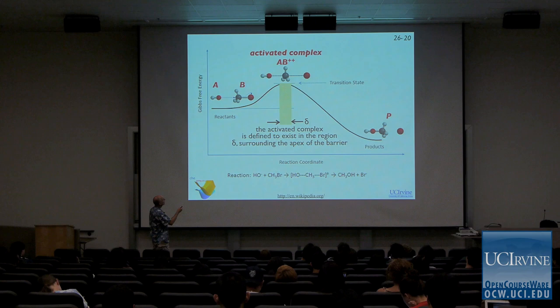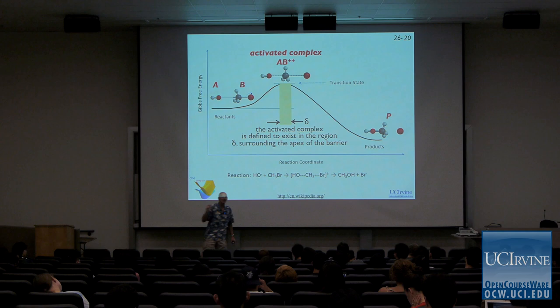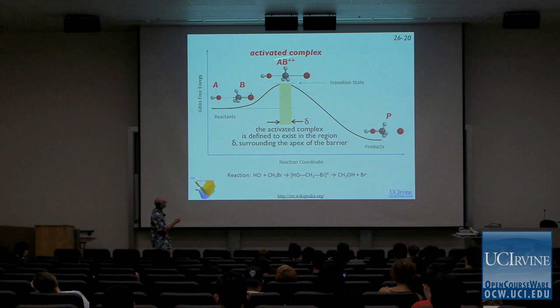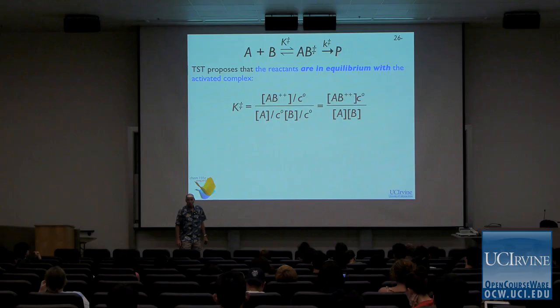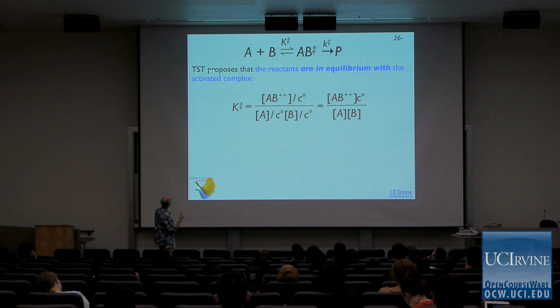It turns out that transition state and activated complex should not technically be used interchangeably — there's a nuance. The activated complex actually exists over a range of the reaction coordinate, whereas the transition state in principle exists only at a particular point in time. We're not going to bother with that distinction today. There's a fine point there that you should know: these are not identical, they are not interchangeable, but today we're just going to use those two terms interchangeably.